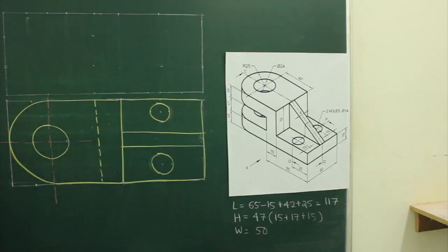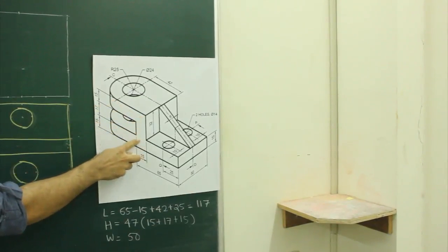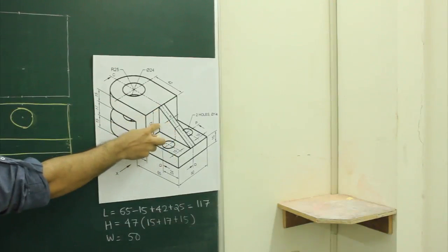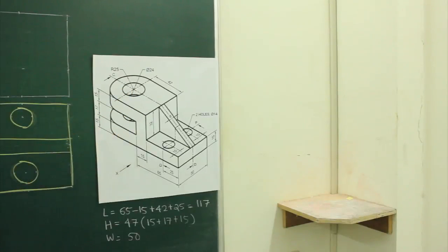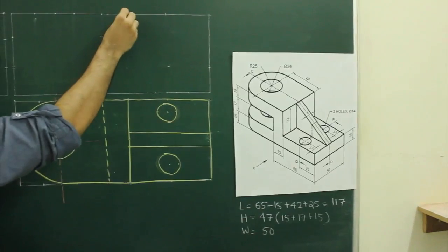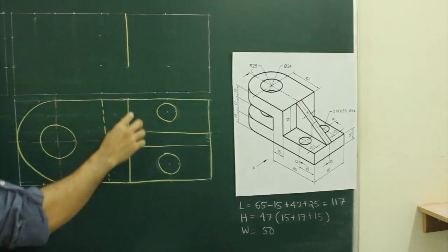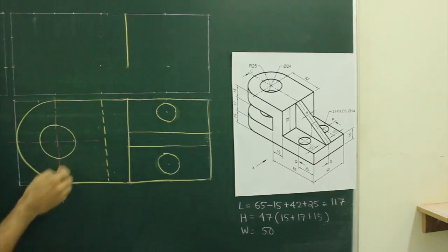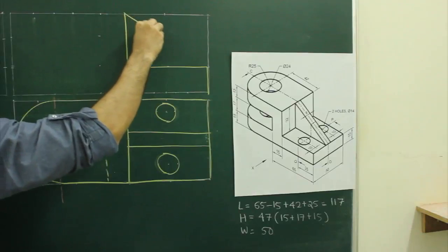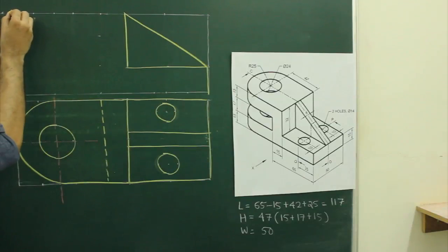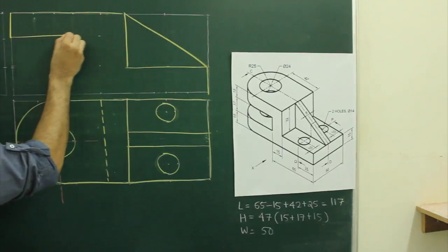Now we need to draw the front view. If you see the main diagram, in the front view this part will appear as a rectangle, and this part would be a triangle, and this circle is going through and through. We will draw an L shape for this part. First we will draw the L shape — we will present from here. Height is 32. Draw horizontal and you can join this. We will extend this till here.